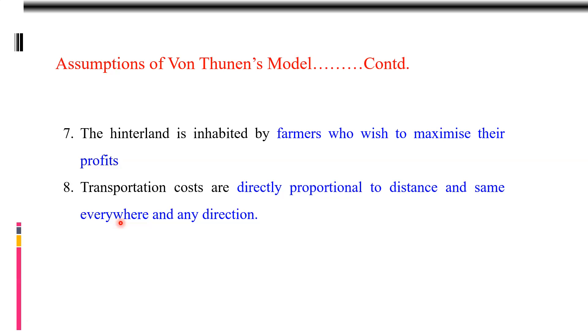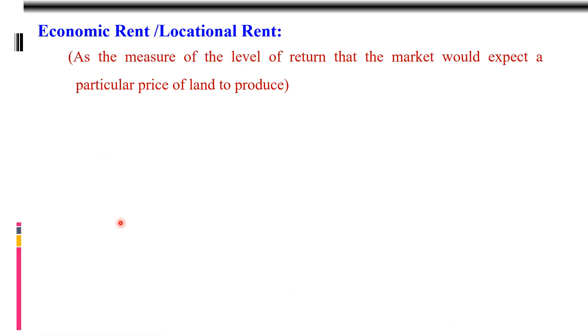The cost of transport is equal in each and every direction — that is very important; otherwise, this model cannot be applied. Van Thünen introduced a very important concept: the concept of economic rent, also known as the location rent. On the basis of this concept, he explained his model. Economic rent is a measure of the level of return that the market would expect a particular piece of land to produce — it is dependent on market price, production cost, and transport cost.